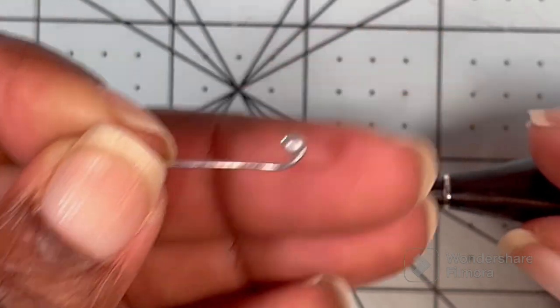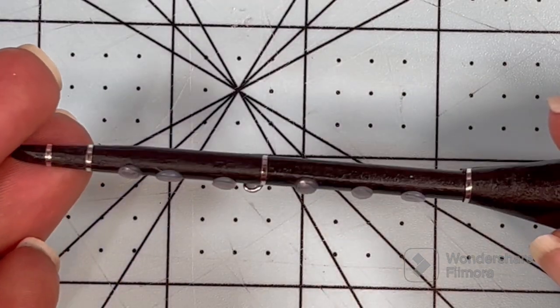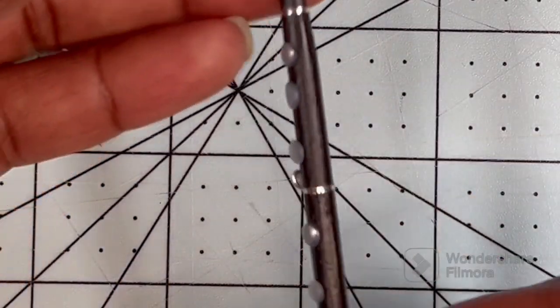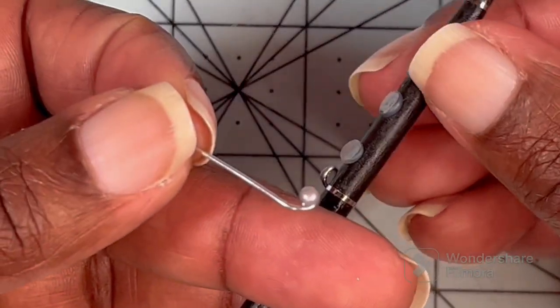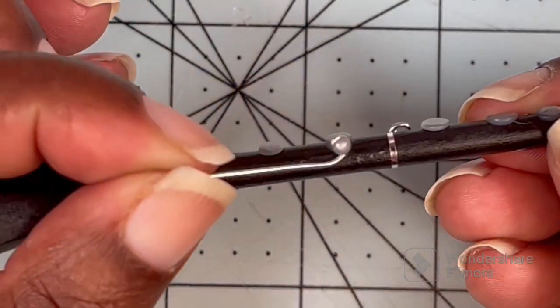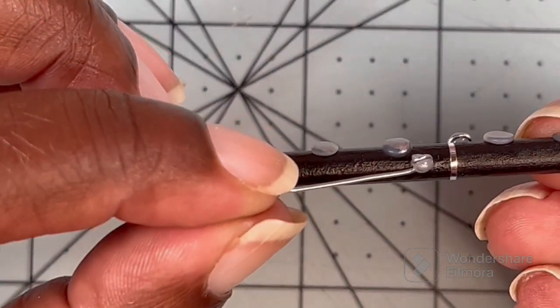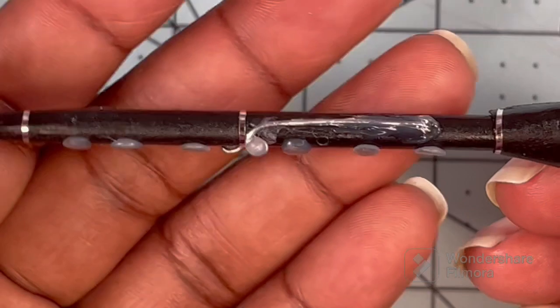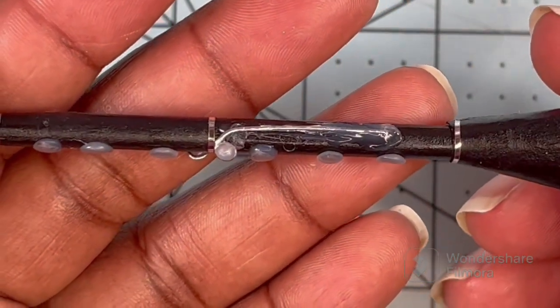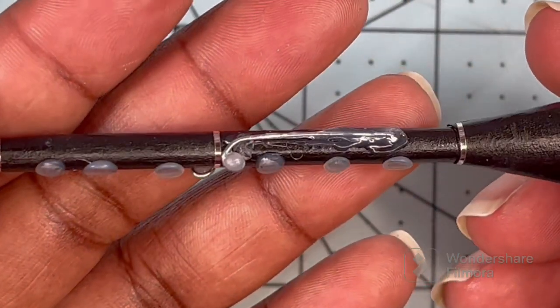So our last wire piece is going to go on the other side of the clarinet, so on this lower part here, and it's going to face towards the other keys. So that one is glued into place and just like all the other ones we'll clean up that glue later.